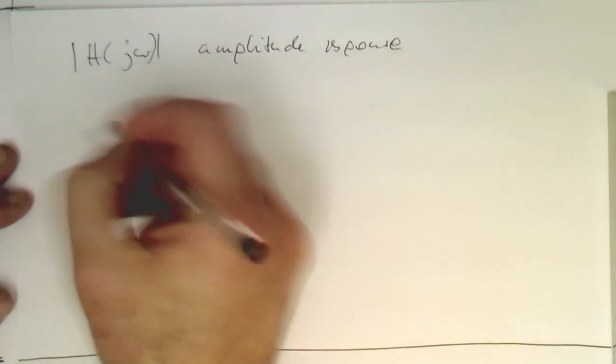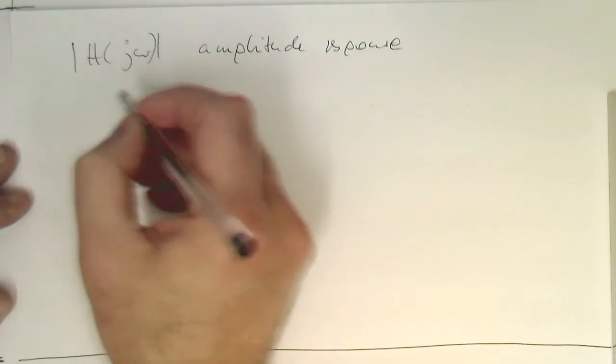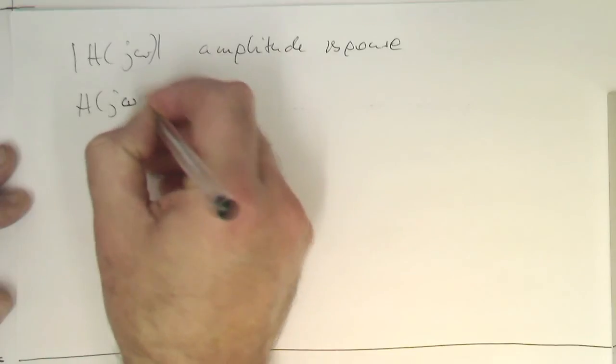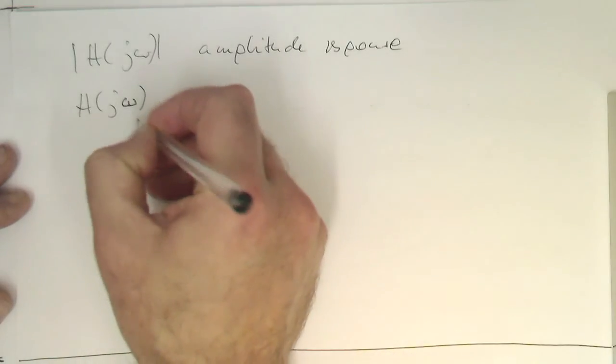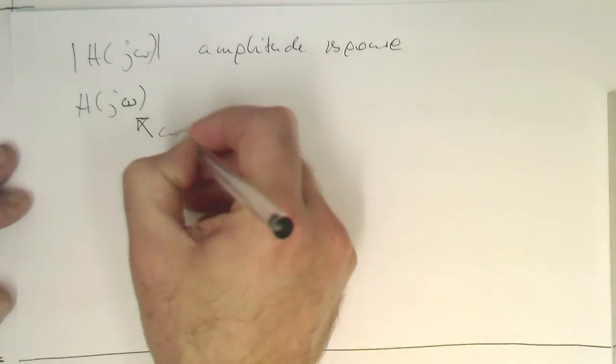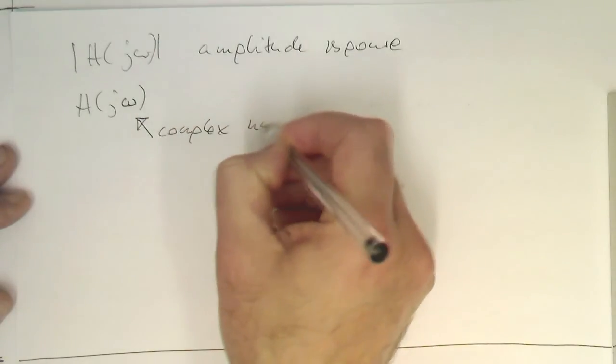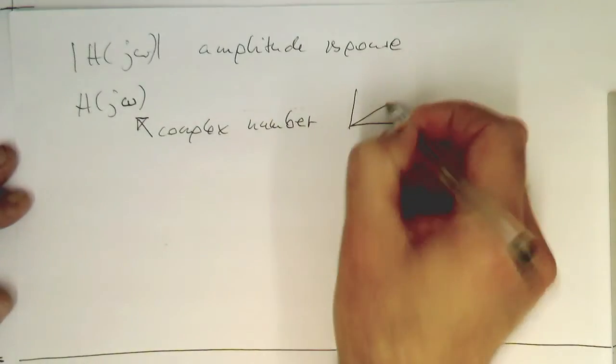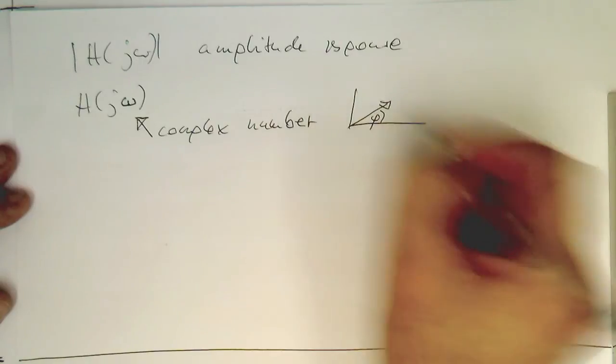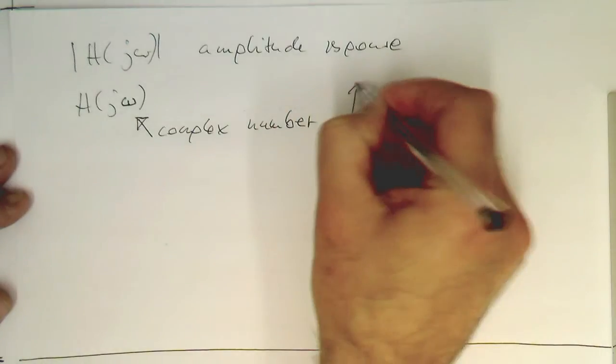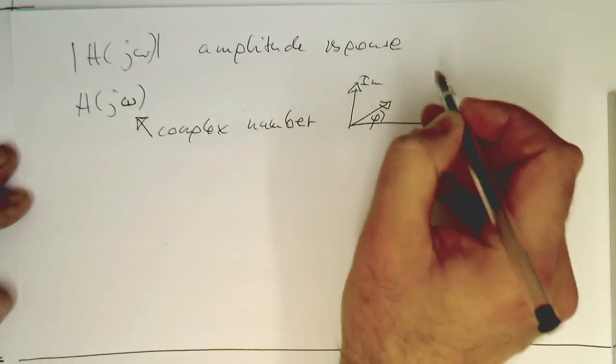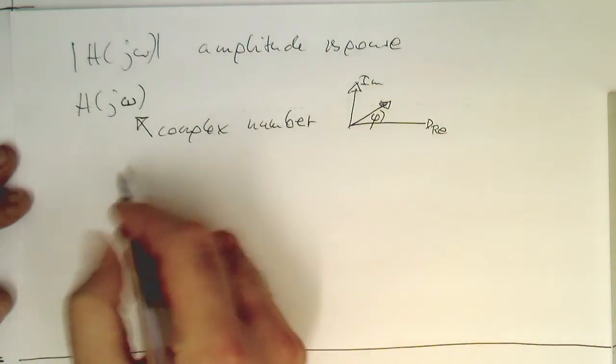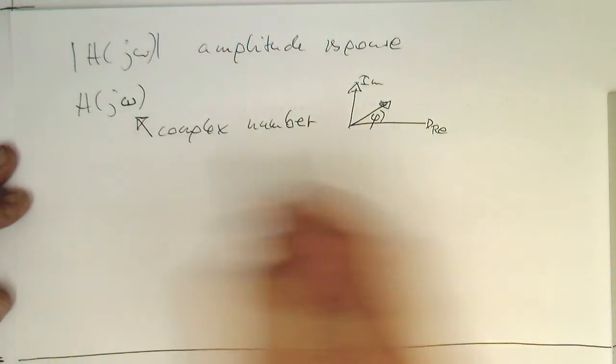Now, another thing what we can do with this H of omega here. The H of j omega is a complex number. The whole expression here is a complex number. This gives us an angle here of the real and the imaginary part. And this angle defines a phase shift.